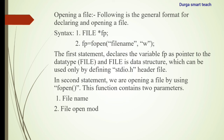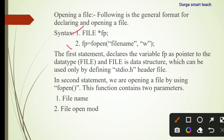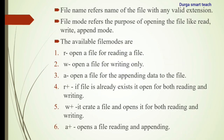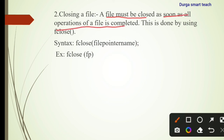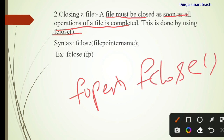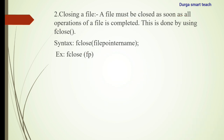So we have seen how to open a file. You need to follow this syntax: FILE *fp and then fp = fopen(filename, file_open_mode). Next, how to close a file. A file must be closed as soon as all operations on the file are completed. This is done using fclose(). fopen() is used for opening a file and fclose() is used to close a file.